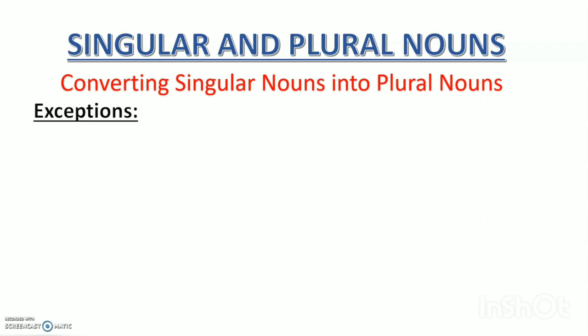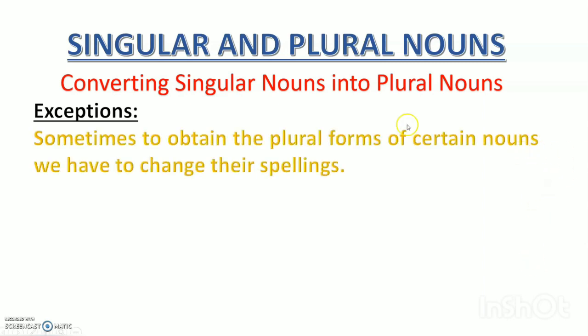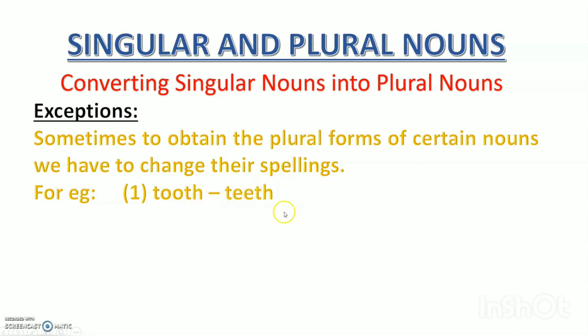Now there are some exceptions. Kuch special cases bhi hote hain jahan na ES, na IES, na VES, na S kaam karta hai. To get the plural form we have to change the spelling. For example, tooth — ek daat; many would not be tooths. The two middle O's are replaced by double E: teeth. We have 32 teeth in our mouth. Child — ek bachcha; plural is not childs but children, ending in R-E-N.